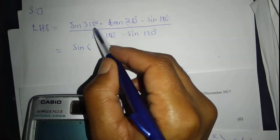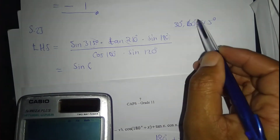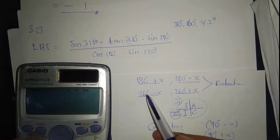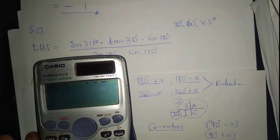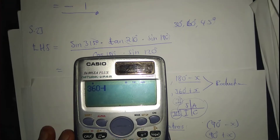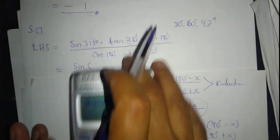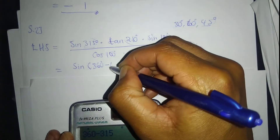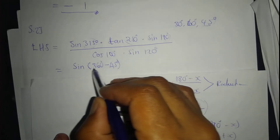We produce each angle into an acute angle using reduction formulas. The angles must be reduced to special angles: 30°, 45°, or 60°. For 315°, it's closest to 360°, so 360° minus 315° equals 45°, which is a special angle. So sin 315° becomes sin(360° - 45°).